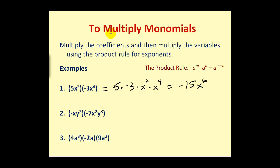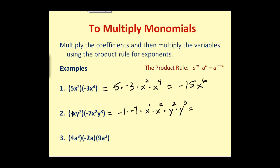Moving on to number two, it may be helpful to think of a -1 as the coefficient of the first monomial. So rearranging the order by putting the coefficients next to each other: -1 times -7, then we address the variables — x to the first times x² times y² times y³. When we multiply the coefficients we get positive 7, giving us 7x³y⁵.